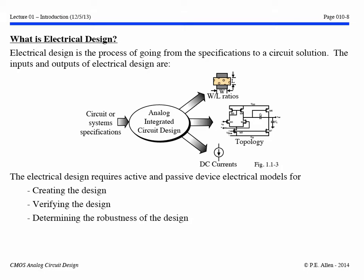Here we want to address what is the electrical design. It's a process of going from the specifications to a circuit solution. The inputs are the specifications, and the outputs are a topology, W over L ratios, DC currents, and perhaps values of components like capacitors. The electrical design requires active and passive device electrical models for creating, verifying, and determining the robustness of the design — all done without the use of computers.